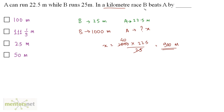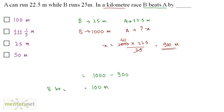By how many meters has B beaten A? This equals 1000 — the distance traveled by B — minus 900 — the distance traveled by A — which is 100 meters. So B beats A by 100 meters, and that's option A.